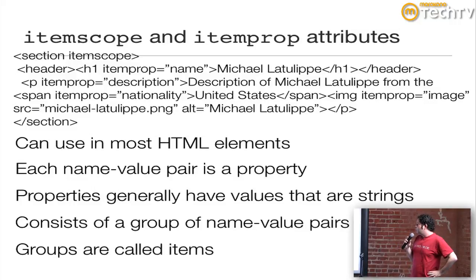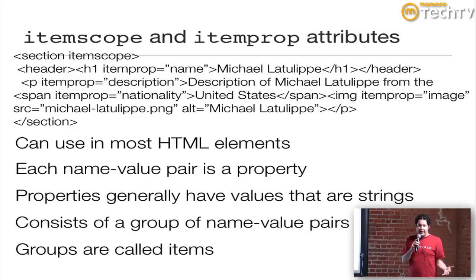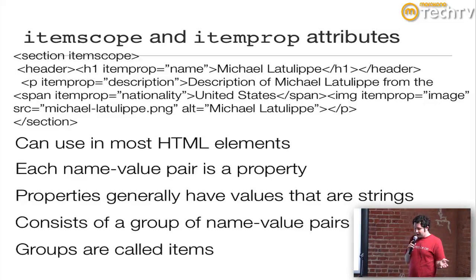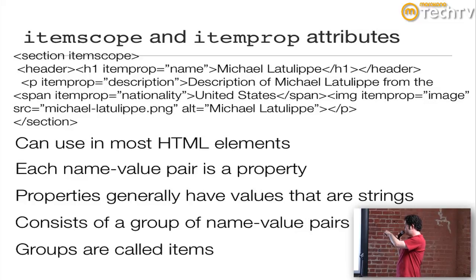First of all, you have the itemscope and itemprop attributes. The beauty of HTML5 microdata is that itemscope and itemprop can be used in basically every HTML element, so you don't need to worry about whether it can be in this tag or that tag — it can be in all the tags. Each name-value pair is a property. Properties generally have values that are strings, and they consist of groups of name-value pairs called items. You start with itemscope to basically tell the system, 'hey, this is something to look at.' Then itemprop name tells you the name — here I've put it in the header tag — and itemprop relates to the description, the nationality, and the image.